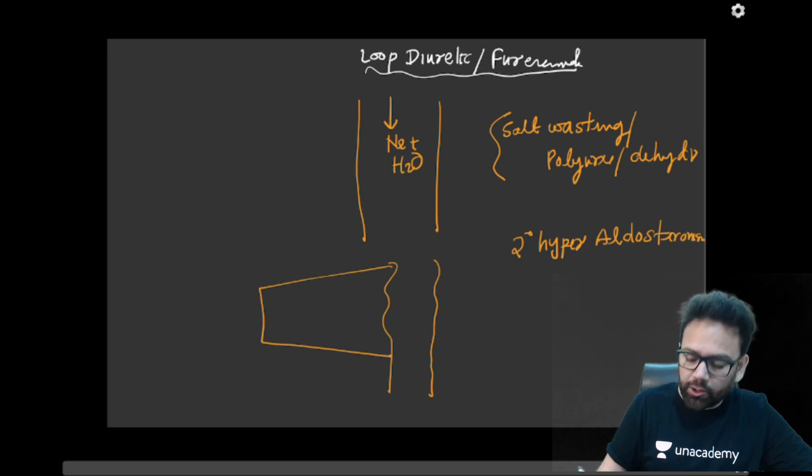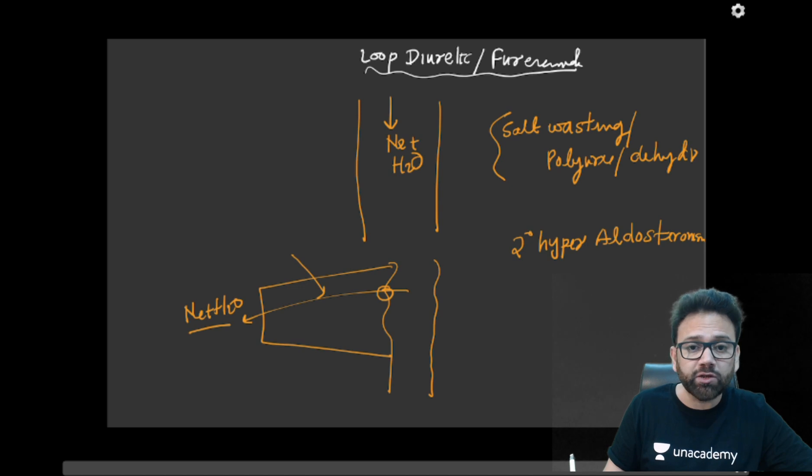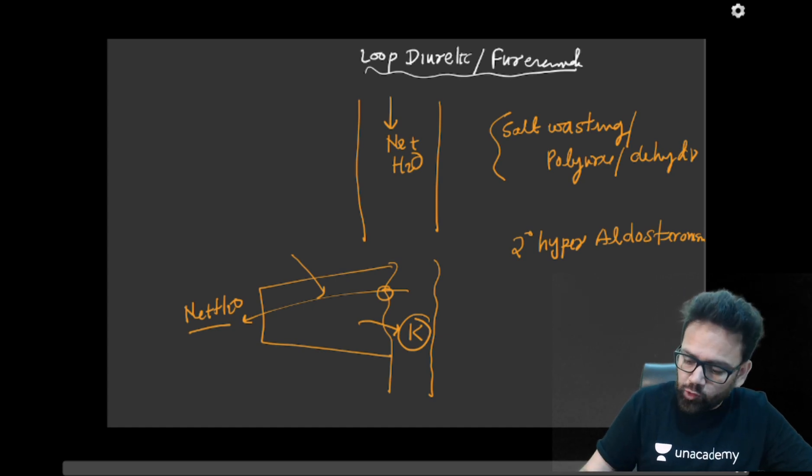And that aldosterone will cause, it will work on ENaC channel. And ENaC channel will help in reabsorption of sodium as well as water. And you know that non-genomic action of aldosterone is to secrete potassium. So by this, you can clearly understand that there will be also hypokalemia. So the next feature will be hypokalemia.